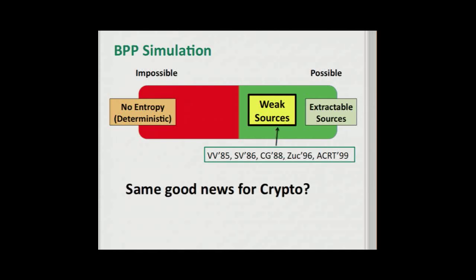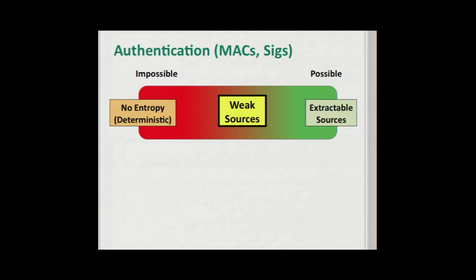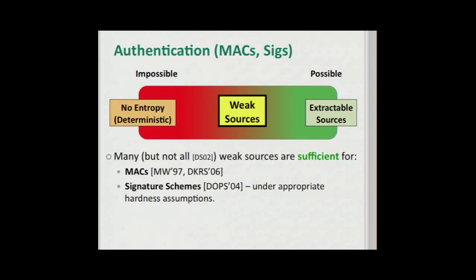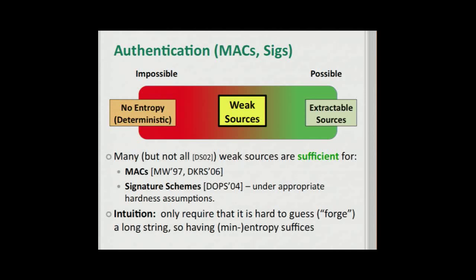We might ask whether we can have the same good news for cryptography. In the case of authentication, the answer is yes and no, but mostly yes. We know that many — not all, but many — weak sources are sufficient for MACs and also for signature schemes under appropriate hardness assumptions. The reason is that we only require that it's hard to guess or to forge a long string, so having min-entropy in the source is good enough.